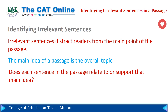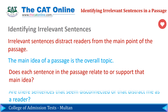Does each sentence in the passage relate to or support that main idea? To revisit our example, the three sentences that discuss chickens support the main idea of chickens. The sentence about the red truck does not — it is an irrelevant sentence. Are there sentences that seem disconnected or that distract you as a reader? Any sentence that seems distracting is probably an irrelevant sentence. Accordingly, sentences that do not connect to the main idea should be avoided.